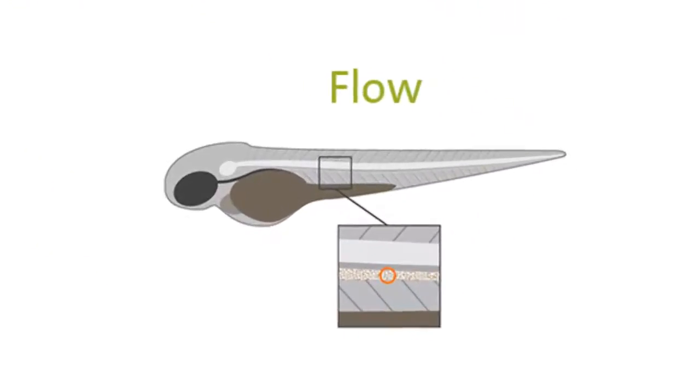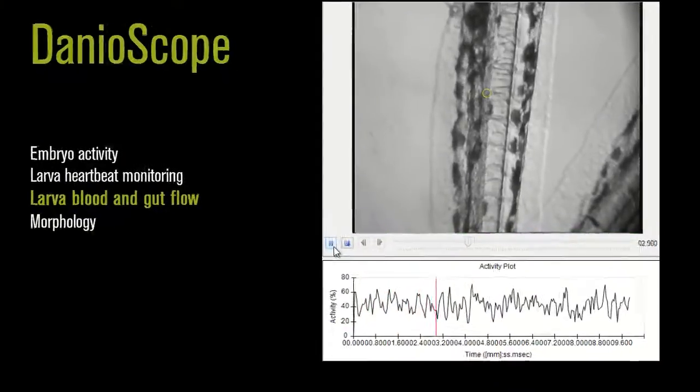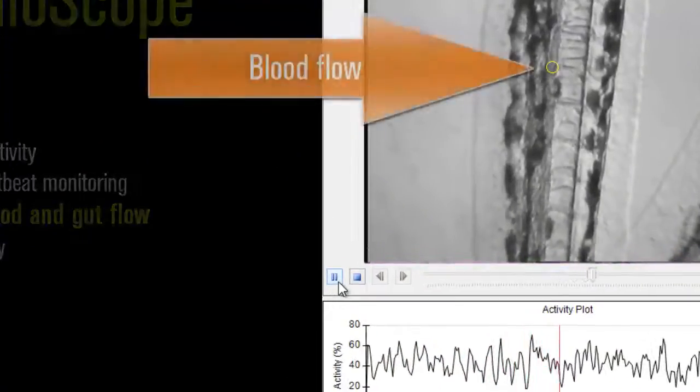Let's move on to blood flow and gut flow. Flow is measured by defining a circular area in the diameter of the vein or elsewhere.